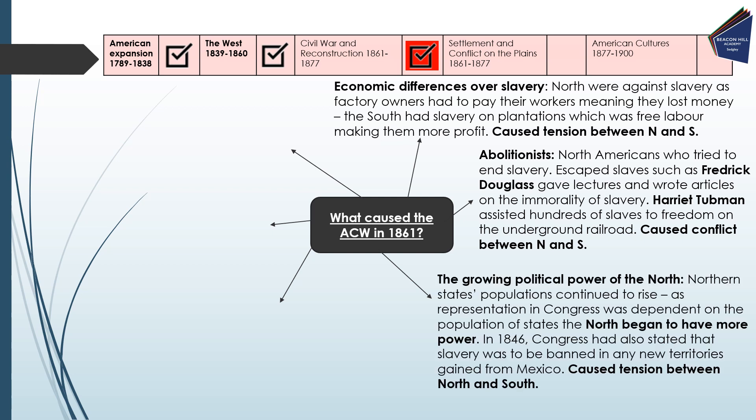We also have the growing political power of the North. Northern states' populations continued to rise, and as representation in Congress was dependent on population, the North began to have more power. In 1846, Congress also stated that slavery was to be banned in any new territories gained from Mexico. The combination of these two things caused huge tension between North and South, with the South very angry about Northern representation growing and slavery being banned in new territory.